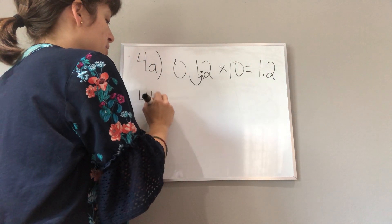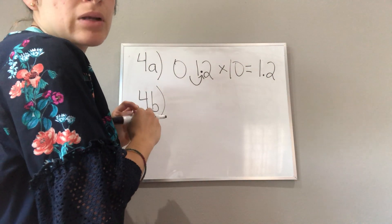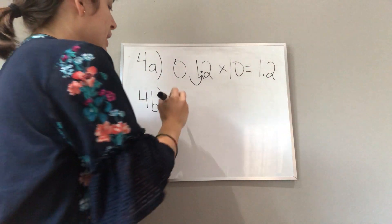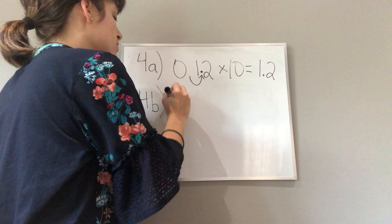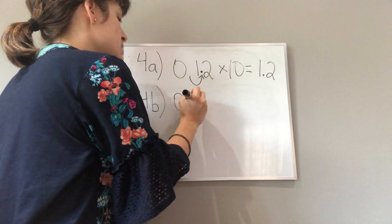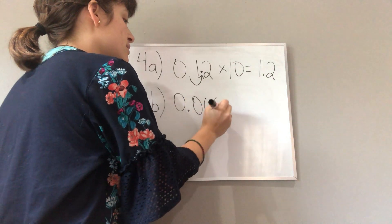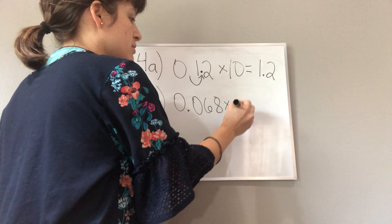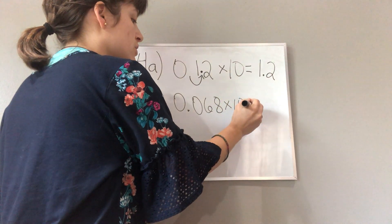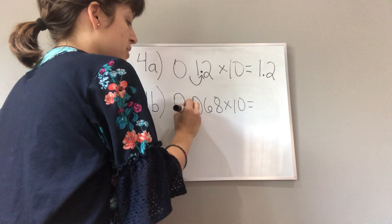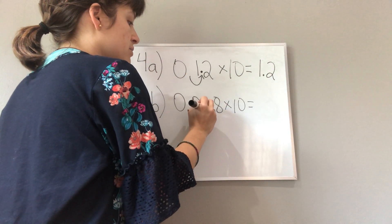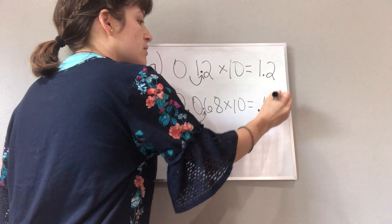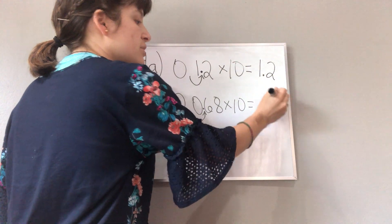Let's look at 4b. We have 68 thousandths times ten. Move the decimal place over one place value and you get 68 hundredths.